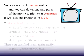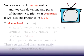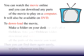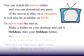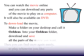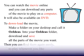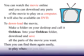To download the movie, make a folder on your desktop and call it Oz Ideas. Into your Oz Ideas folder, download and save all the parts of the movie you want. Then you can find them again easily, to play whenever you like.